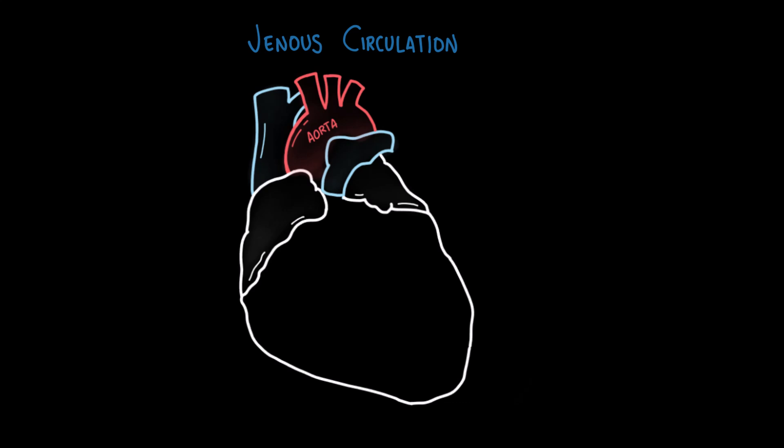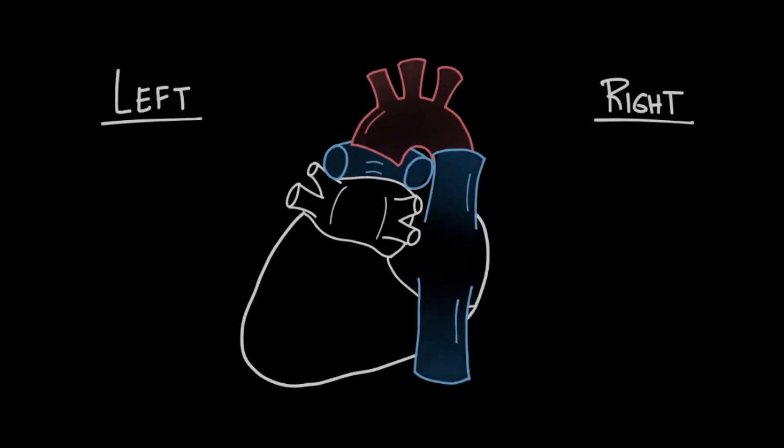One of the most important veins is the great cardiac vein. It arises from the apex of the heart, travels on its anterior surface alongside the LAD. When it reaches the coronary sulcus, it follows the circumflex artery towards the posterior surface of the heart. From a posterior view, we can see the great cardiac vein draining into the coronary sinus, which is a large venous structure where most of the veins of the heart drain into.